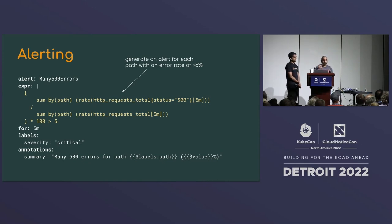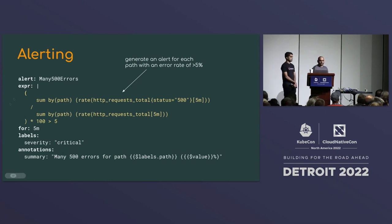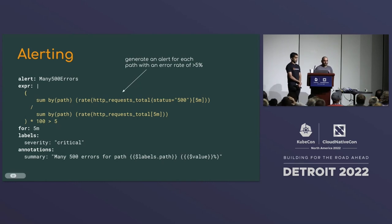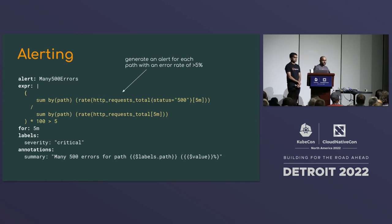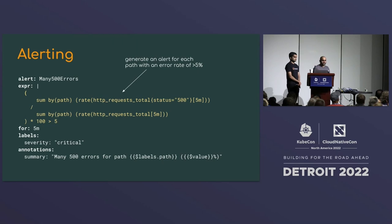Alerting works by writing an expression that matches a list of time series — whenever a time series matches the alert condition, you send an alert. One powerful feature is the 'for' period: if you have a brief blip of errors that quickly recovers, you don't want a 3 AM page for it. By configuring a 'for' duration — say five minutes — you're only alerted if the condition is true continuously for that period, reducing unnecessary pages.